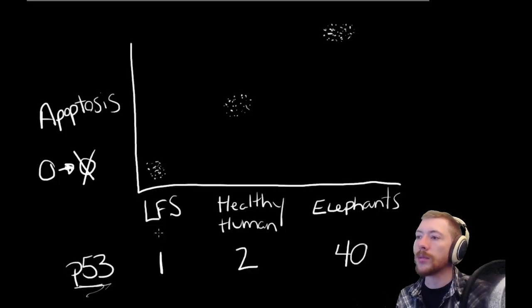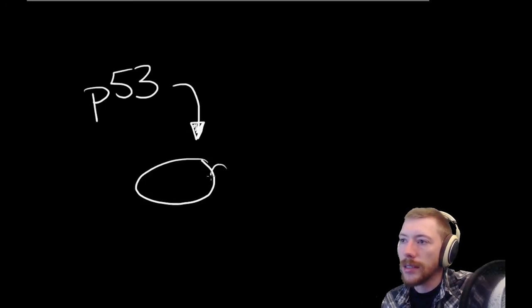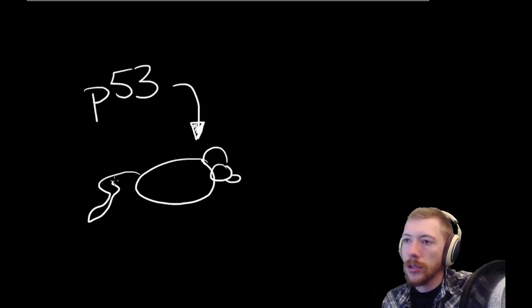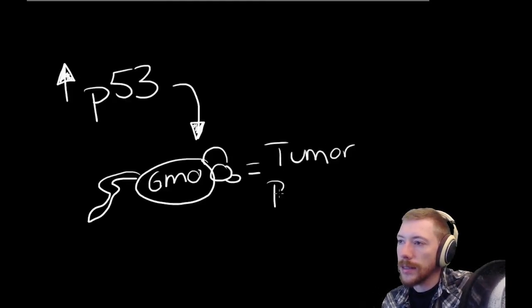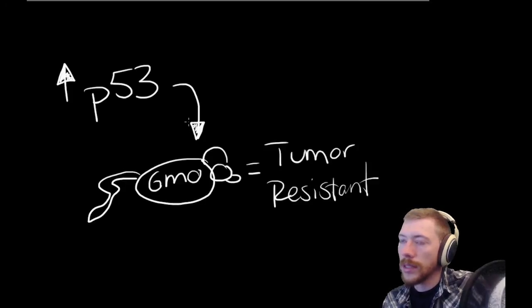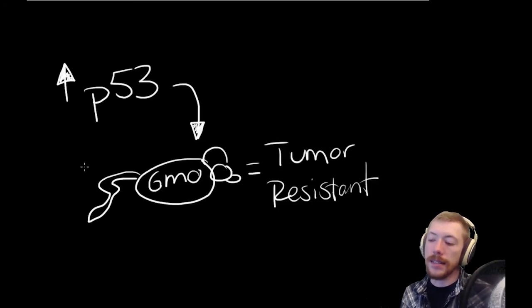And I will leave you guys with one last interesting piece of information. If you take the P53 gene and you increase the number of P53 genes in a mouse, so you create a transgenic mouse that has an increased number of P53 genes, this mouse will become tumor resistant. So in the same way that the elephants with an increased number of P53 genes have a decreased risk for cancer, you can actually create a transgenic mouse that has a similar reduction in their risk for cancer. And this is a really interesting discovery.